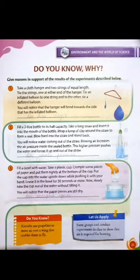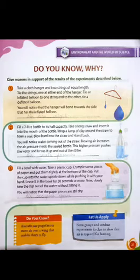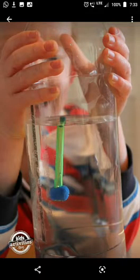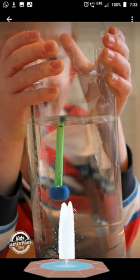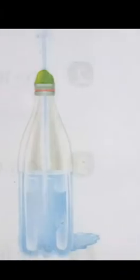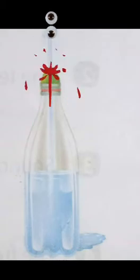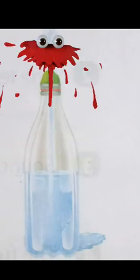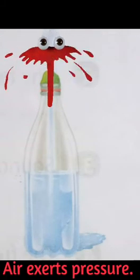Next, fill a two-litre bottle to its half capacity. Take a long straw and insert it into the mouth of the bottle. Wrap a lump of clay around the straw to form a seal. Blow hard into the straw and stand back. You will notice water coming out of the straw. Blowing air increases the air pressure inside the sealed bottle. This higher pressure pushes the water and forces it up and out of the straw, because air exerts pressure.